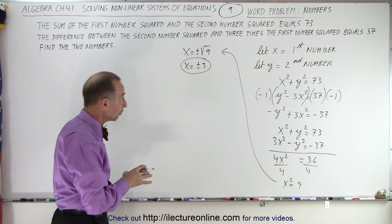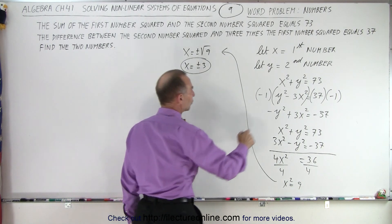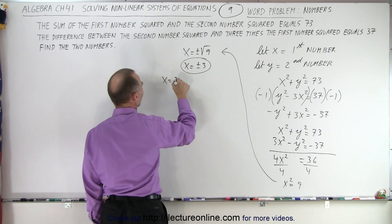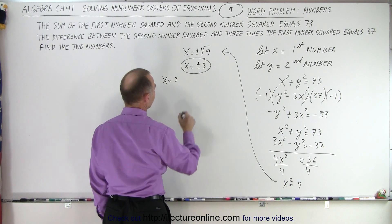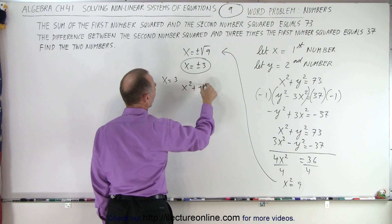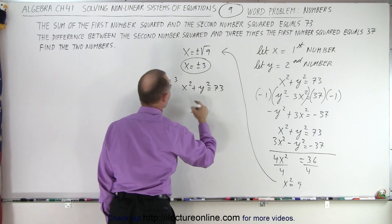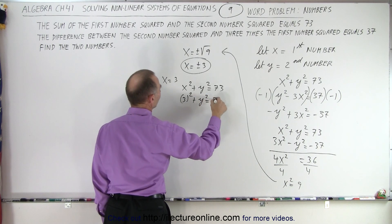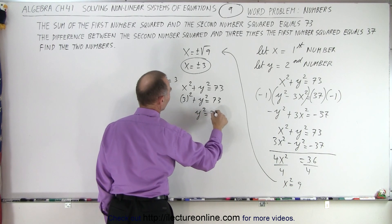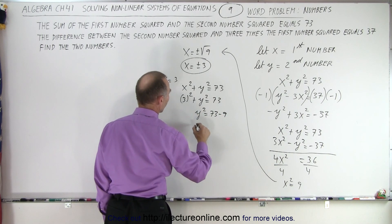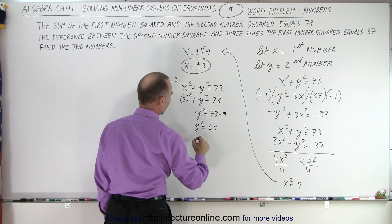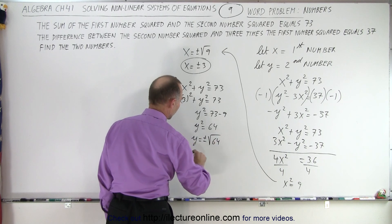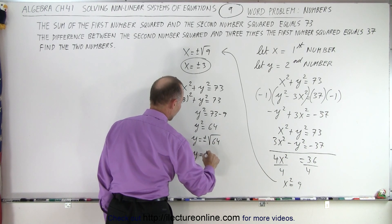Let's see what the corresponding solutions are for y. So we have to plug that back into one of our two equations. So if x is equal to positive 3, then we have x squared plus y squared equals 73. x is 3, that means 3 squared plus y squared is equal to 73. y squared equals 73 minus 9 or y squared is equal to 64.